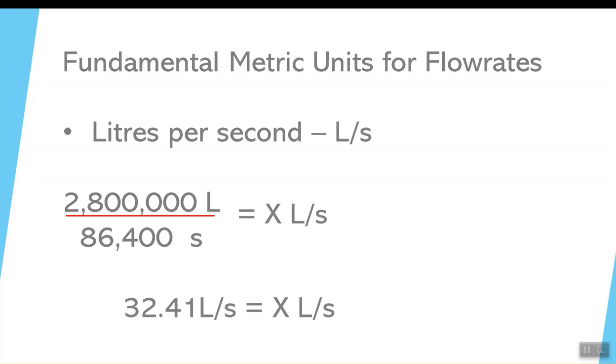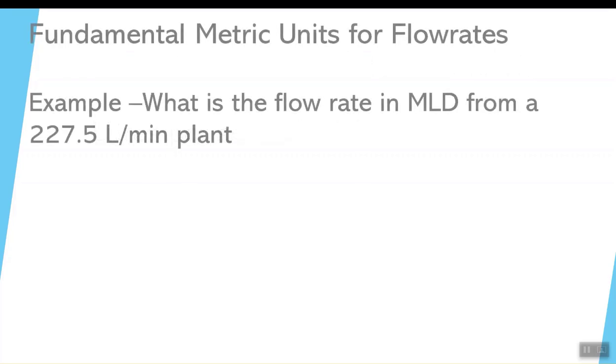So over the span of one day, you have 2.8 million liters or 2.8 megalitres flowing over a 24-hour time period. Sometimes it's going to be a little faster, sometimes a little slower. But on average, each second, there is about 32.4 liters going through this particular water plant.